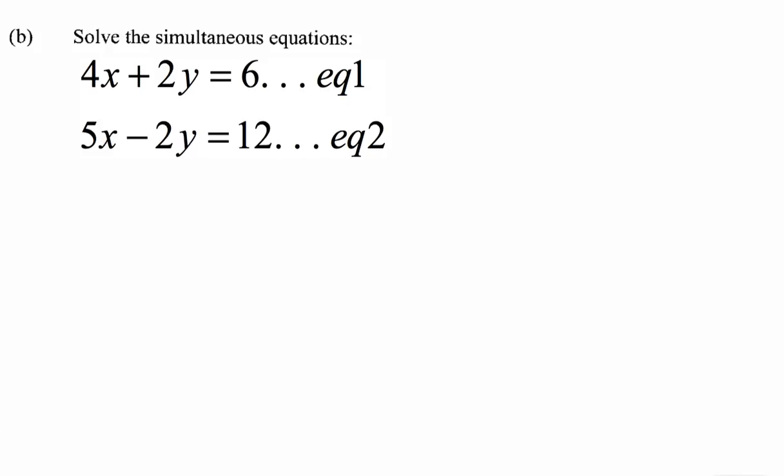If you notice carefully, in equation 1, you have positive 2y, and in equation 2, you have negative 2y. Therefore, in step 4, you have to add the two equations together if you want to eliminate the y variable completely.